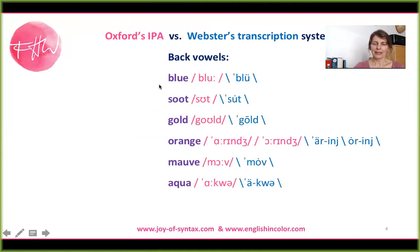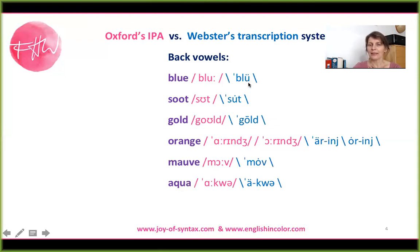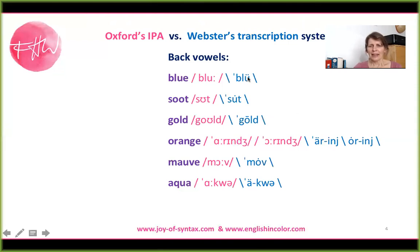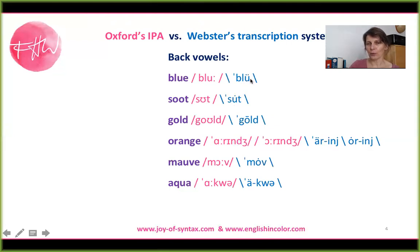Back vowels. I'll read them and then I'll talk a little bit: blue, soot, gold, orange, mauve, aqua. I want to point out three things. Number one, notice that Webster uses basically the same symbol — basically the letter U — for both. I find that a bit of a problem because the letter U can also represent the sound as in 'hat.' They suggest that one is longer by putting two dots on top — and now it looks like a German umlaut, but it is not a umlaut — and here's just one dot. But this suggests that these are basically the same sounds, only that this one is longer. But that is not true. It's not true for American English, and it's definitely not true for British English. When you compare 'food' and 'foot' — blue, soot, blue, soot — you see that there's a little bit more lip rounding for blue. It's not only longer, it's also wavier and it has a little bit more lip rounding.